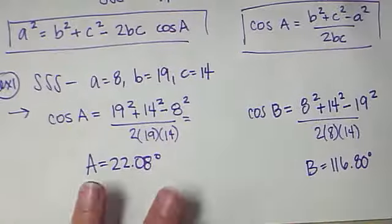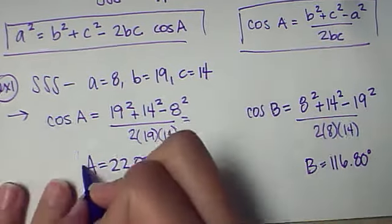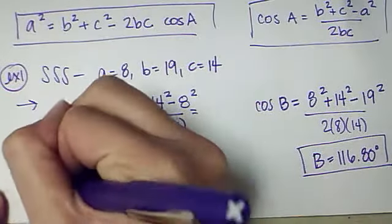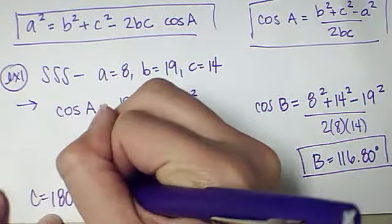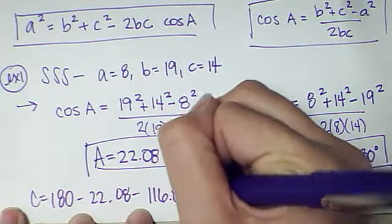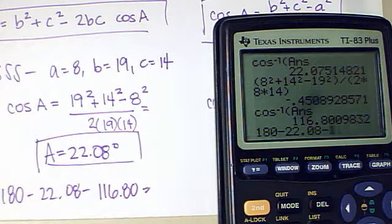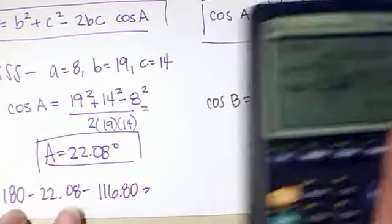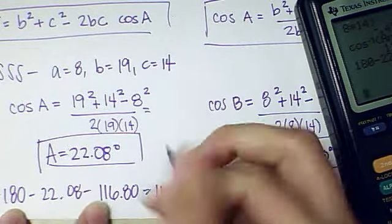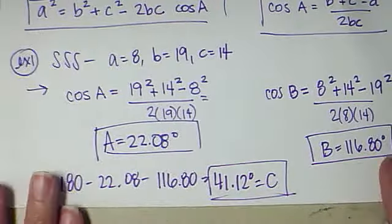Okay, now that I have two angles, I could follow that and do it again for cosine of C. Or I could follow the easier method, which would be that when I have two angles to find the third, I do 180, minus A, minus B, and that will give me C. So, if I throw that into my calculator, 180, minus 22.08, minus 116.80, I get 41.12 degrees equals C. And I have three solutions for this problem, one solution, and I've solved the triangle.